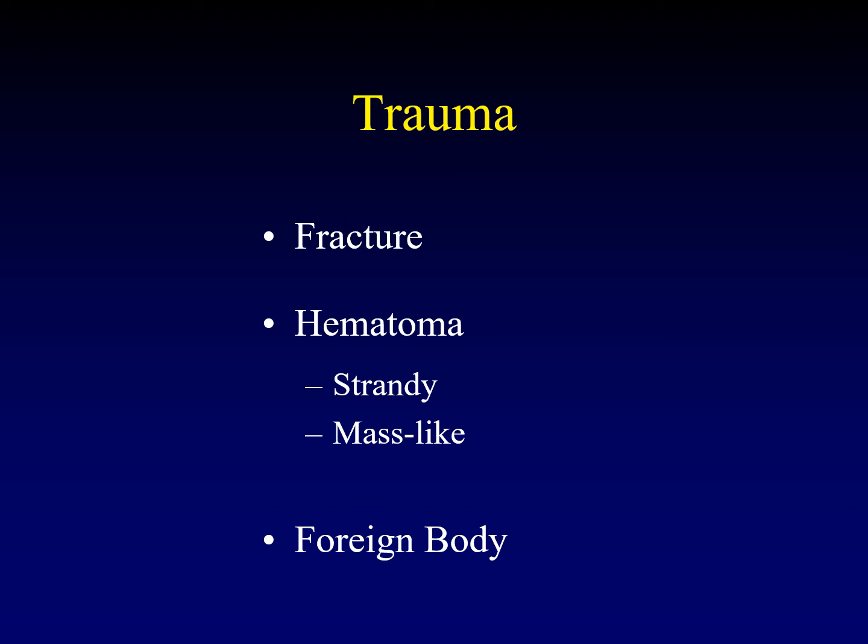Those fractures are covered in greater detail in the facial fracture lecture, but we will briefly discuss them here. There are two types of hematoma we can encounter in the orbital soft tissue: the classic mass-like hematoma shaped like a fist — just a ball of clot sitting there — and a strandy form in which the hematoma tracks along the fascial planes of the orbit, looking just like inflammation but actually being hematoma.